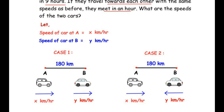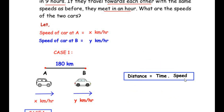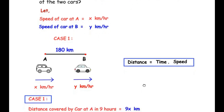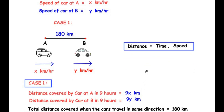We are going to make use of the distance-speed-time formula: distance equals time multiplied by speed. Starting with Case 1, the distance covered by car at place A in 9 hours is 9 times x, which equals 9x kilometers. Similarly, the distance covered by car at place B in 9 hours is 9 times y, which equals 9y kilometers.